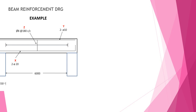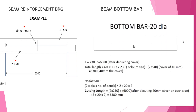Refer to the image of the beam reinforcement shown here. The length of the beam is 6 meters exclusive of the column. So we add the column width as 230 mm on each side, giving a total length of 6460 mm. The bend length will be 230 mm, so A will be 230 mm, and B will be 6380 mm after deducting cover. The total length will be 6000 plus 2 into 230 (column sizes) minus 2 into 40 (cover of 40 mm), equal to 6380 mm. Deduction: 2 into dia of the bar into number of bends = 2 × 20 × 2. Cutting length therefore = 2 × 230 + 6000 − 2 × 20 × 2 = 6380 mm.